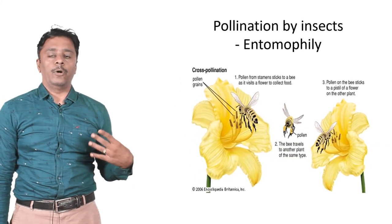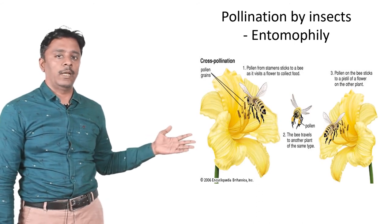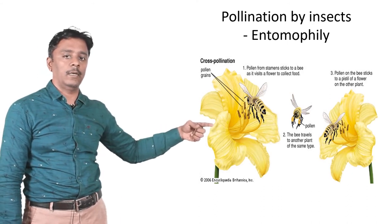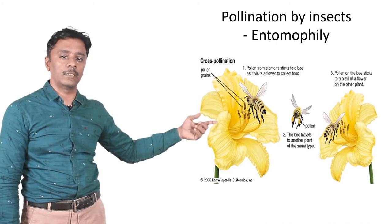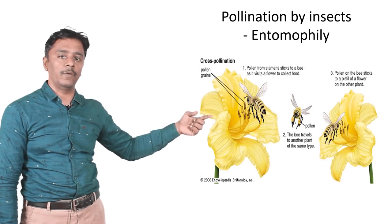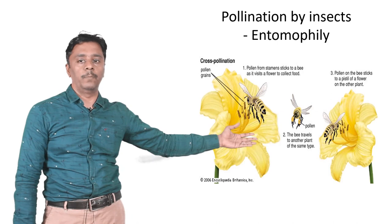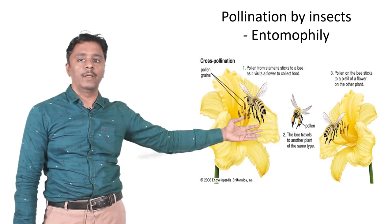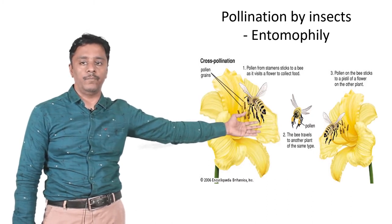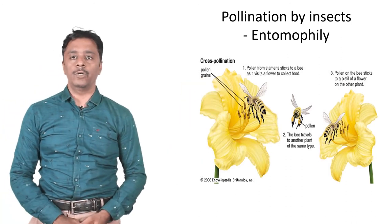How does pollination by insects take place? You can see cross-pollination here. The pollen grains are present in the flower; the honeybee tries to get those pollen grains and some honey. Pollen from the stamen sticks to the bee as it visits a flower to collect food. The pollen grains stick to the legs of the insect. The bee travels to another plant of the same type, and the pollen sticks to the stigma of the flower on the other plant. This is pollination by insects, also called entomophily.